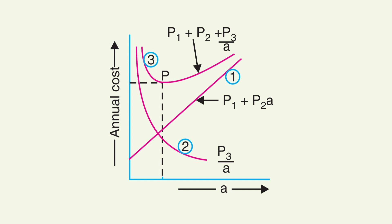Now, if you add these two curves point by point, you get a third curve, the total cost curve, which is C equals P1 plus P2A plus P3 by A. This third curve has a distinct minimum point. That point is marked as P in the diagram and it gives the most economical cross-sectional area. The beauty of this graph is how clearly it shows the trade-off between capital investment and energy loss, and how a balance between the two gives the optimal conductor size.